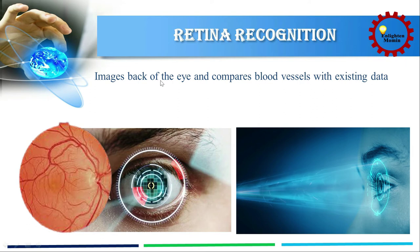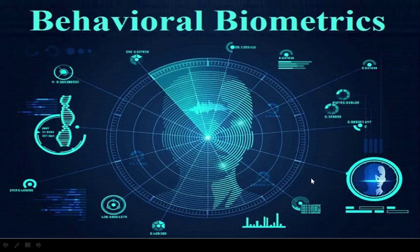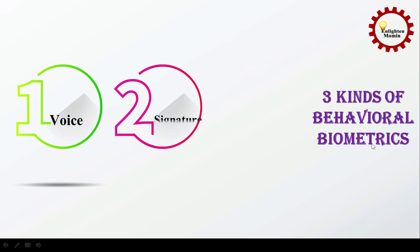Retina recognition uses a visual image of the eye — specifically the back of the eye — and compares the blood vessels with stored data. When you use this biometric system, you scan your retina. The system matches your retina in the database to lock and unlock. If there is no match in your retina, it declares 'no.'